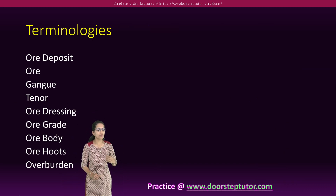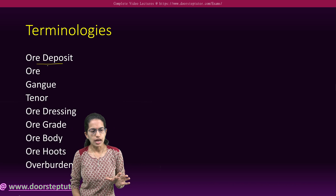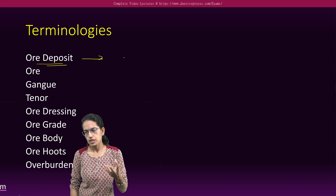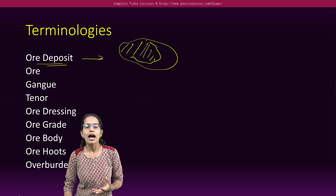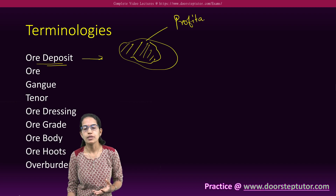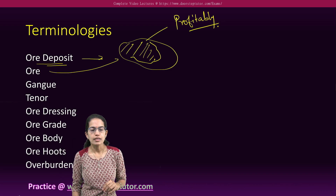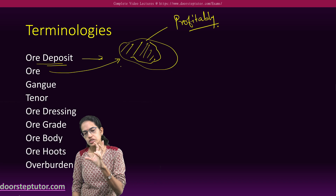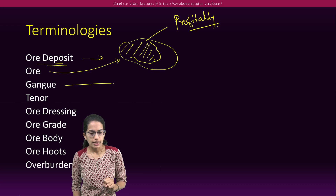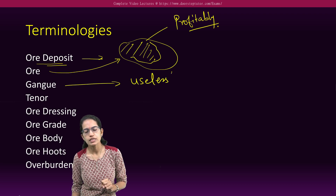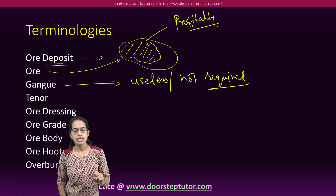Coming on to some terminologies before we dive into economic geology. The first concept is ore deposit. What are ore deposits? If in a rock there is sufficient quantity of mineral that can be extracted profitably, then we call it an ore deposit. So ore is nothing but the part of the mineral which can be profitably extracted from the rock sample. Gang is the useless part — what is not required but is however present — we call this gang.